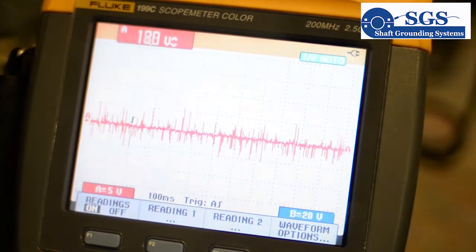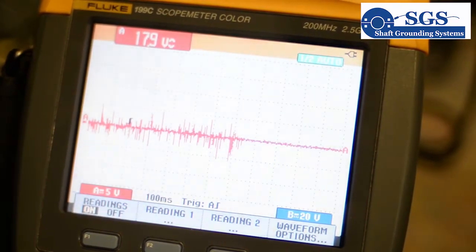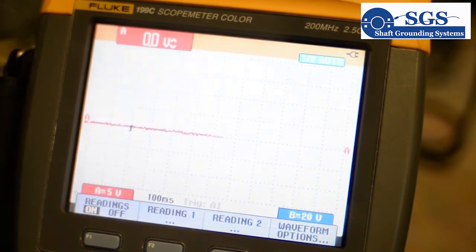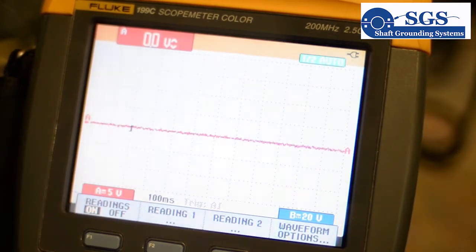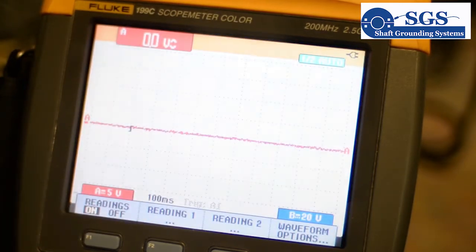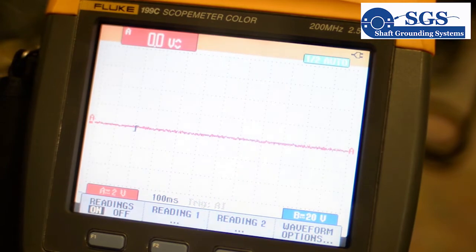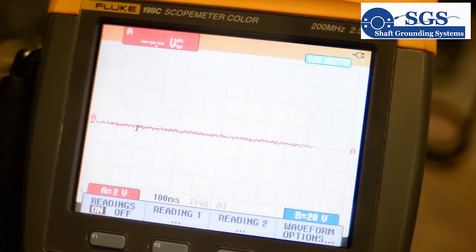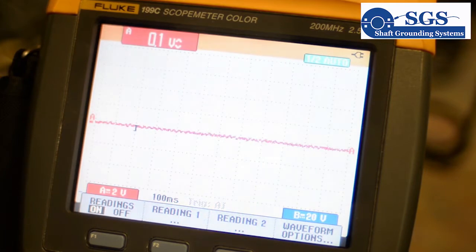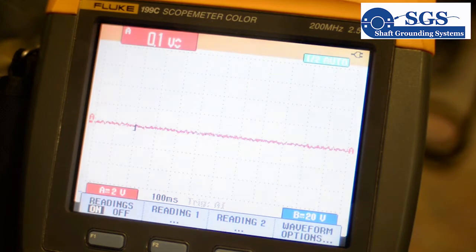And here's what happens when we put our system in. Right now we're at 5 volts per division. We're going to go down to 2 volts per division. And we see approximately 2 tenths of a volt, and it might get as high as 5 tenths and sometimes 7 tenths.